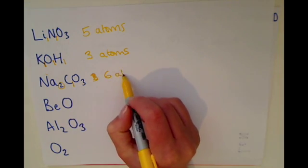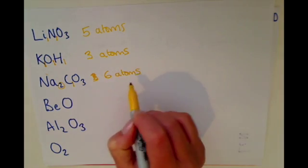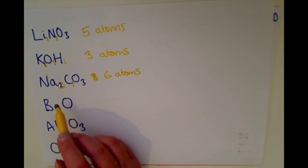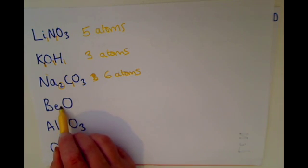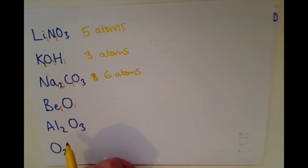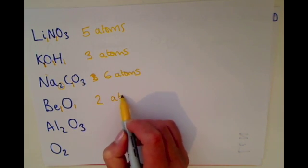Beryllium oxide, no numbers, so one atom of beryllium, one atom of oxygen makes two atoms.